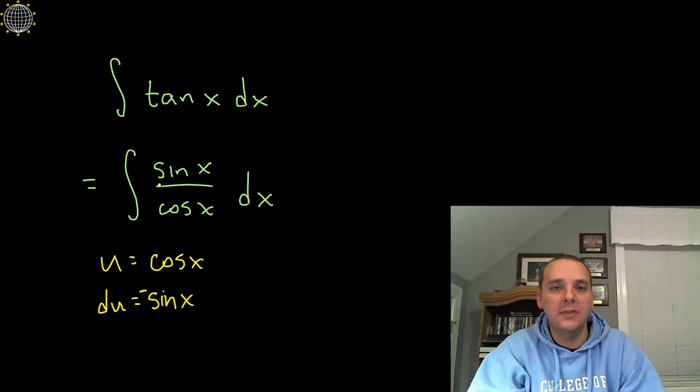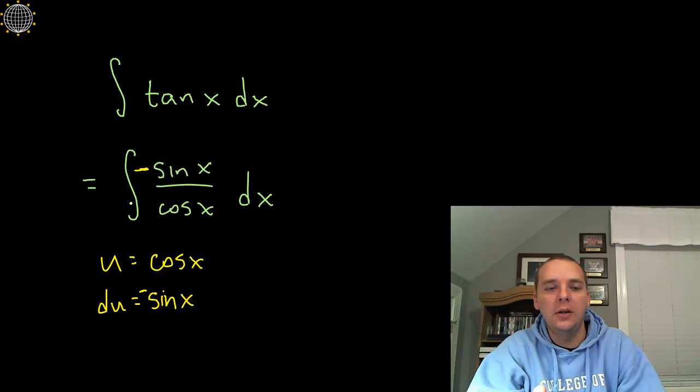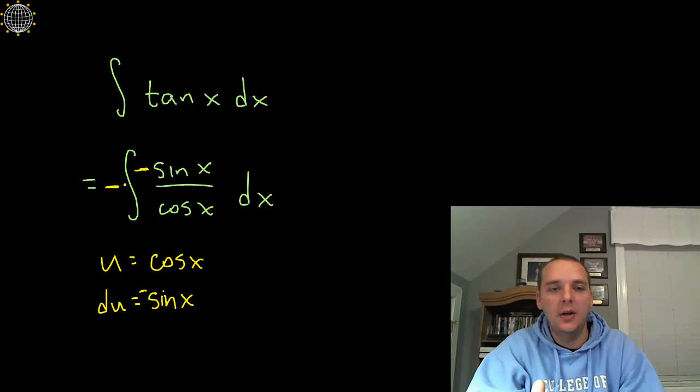Now unfortunately I just have a sine x, but that's not a big deal. If you need a negative, give yourself one. Just make sure on the outside of the integral you balance it with another negative so that it stays equivalent to tangent, because we could pull this negative out and it'll cancel with the negative we have on the outside and you'd be right back where you started.